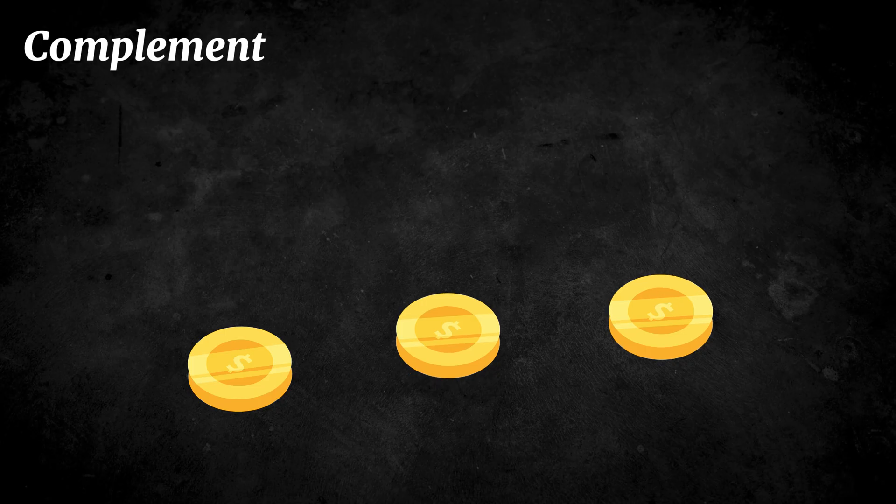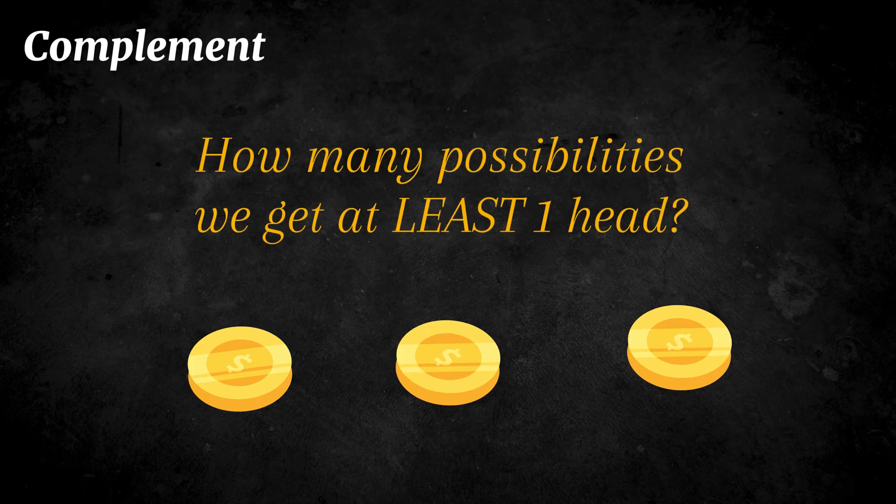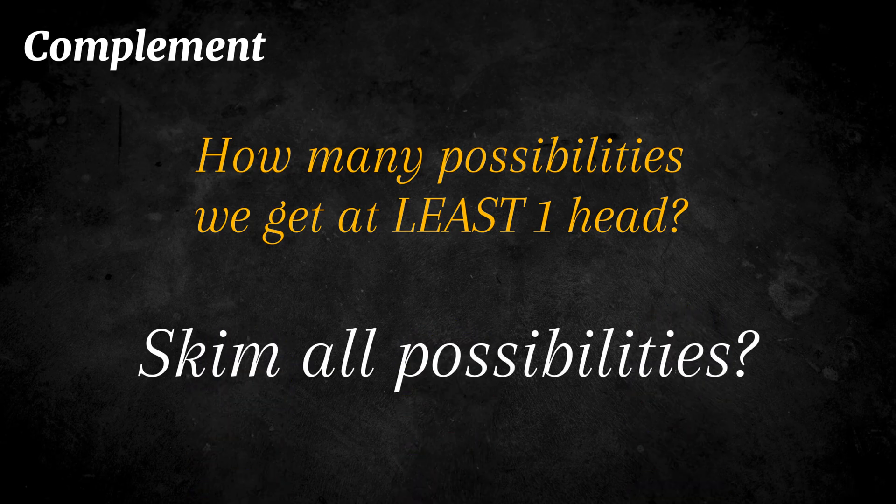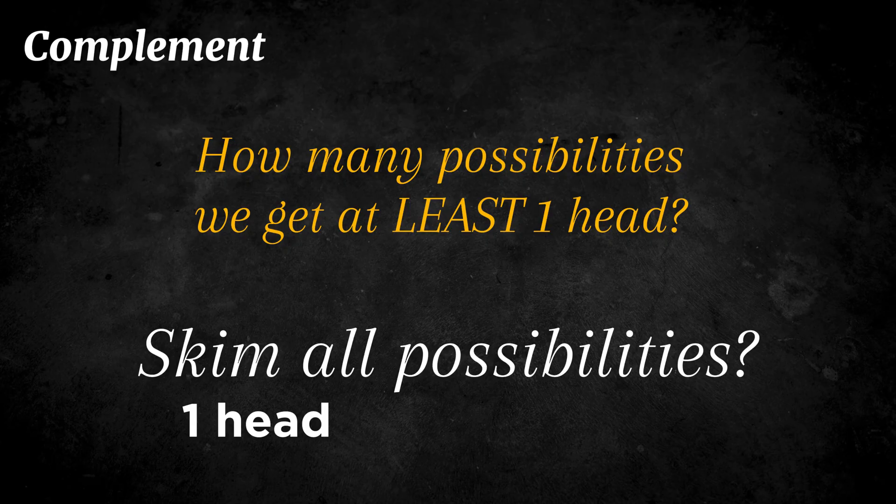Let's take the example of flipping three coins. Suppose we want to know how many possibilities there are where we get at least one head. If we try to count this directly, we would need to think about all the different cases. Maybe one head, maybe two heads, or even three heads. That quickly becomes messy.